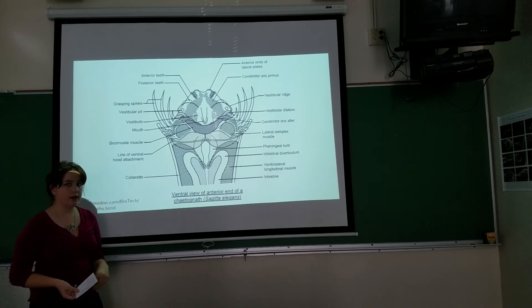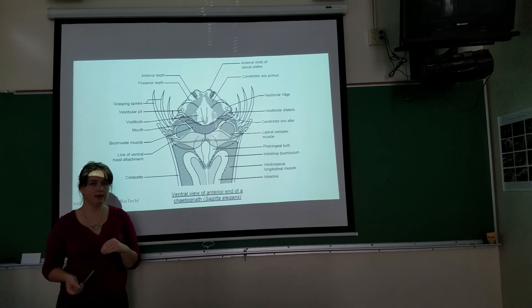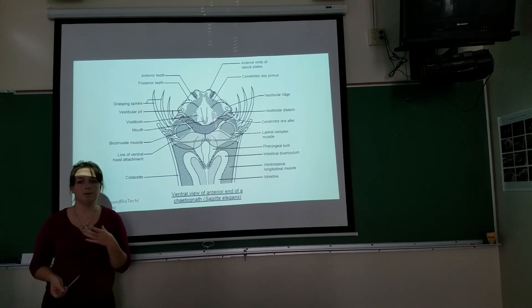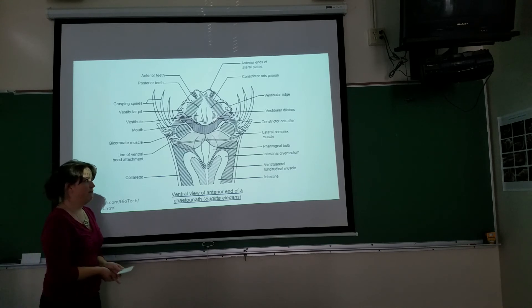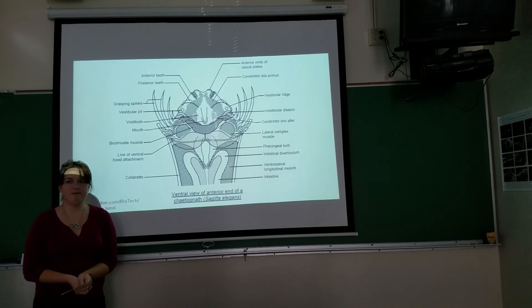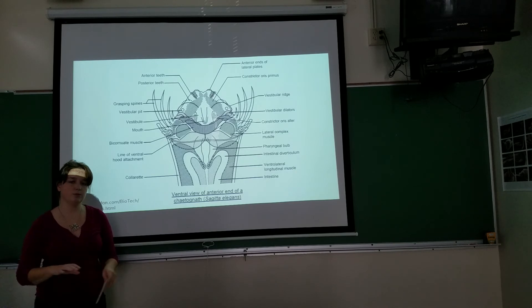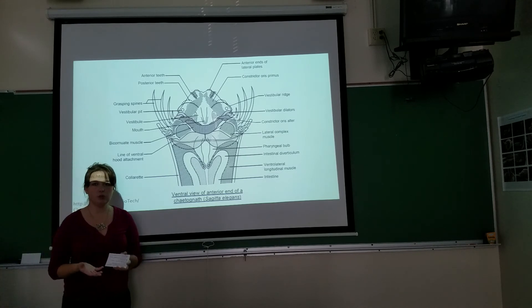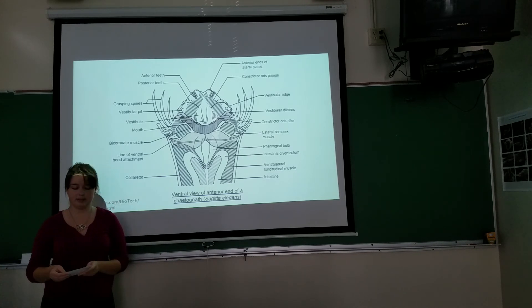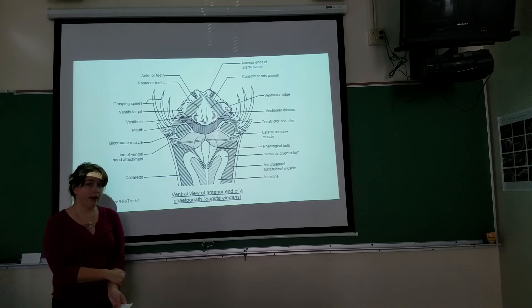In addition to these spines, Chaetognaths also have teeth. They're very small and typically hollow. They are venomous, and this has been found in multiple species across multiple genera. The poison or the venom they seem to use is called TTX, which blocks sodium ion channels and causes paralysis in their prey.